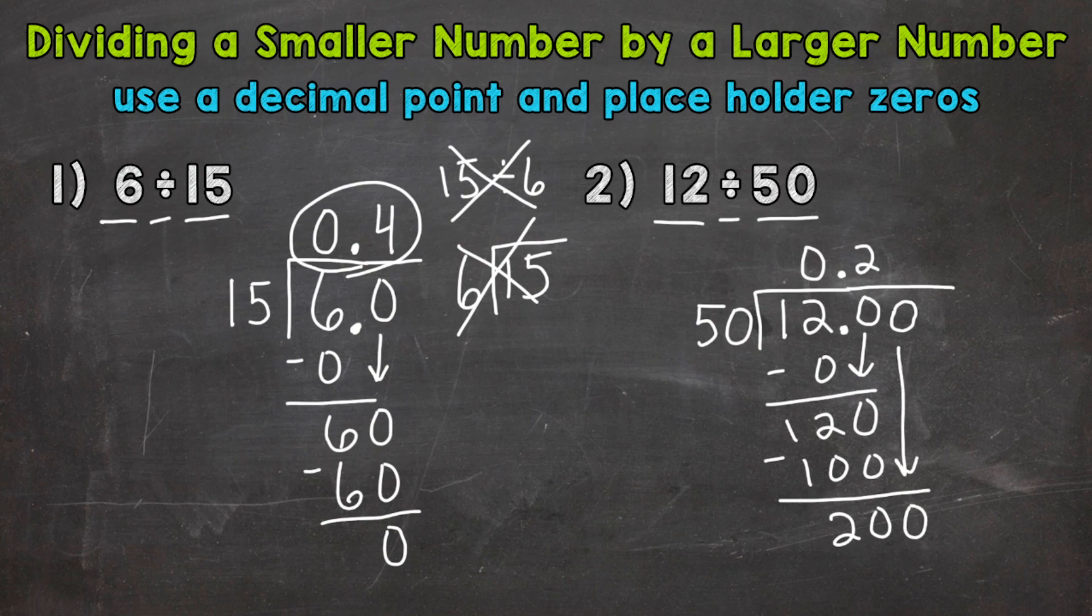So now we have 200 divided by 50. How many whole groups of 50 out of 200? Four. That hits 200 exactly. So this is going to be our last digit in our answer. But let's wrap everything up with our process. So now we need to multiply. Four times 50 is 200. Subtract. And we get that clean cut zero.